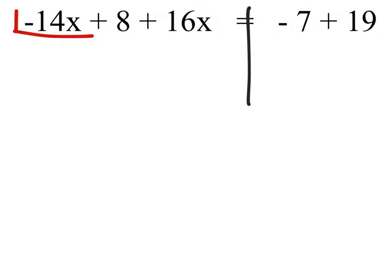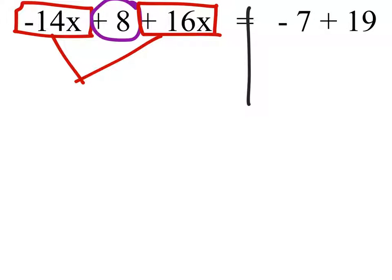So notice this first term here is a negative 14x. The second term is a positive 8. It doesn't have an x, so I'm going to put that in a different shape. The next term has a positive 16x, which does have an x, so I can combine these two x parts. I've got negative 14x plus 16x, and that would leave me with two positive x's.